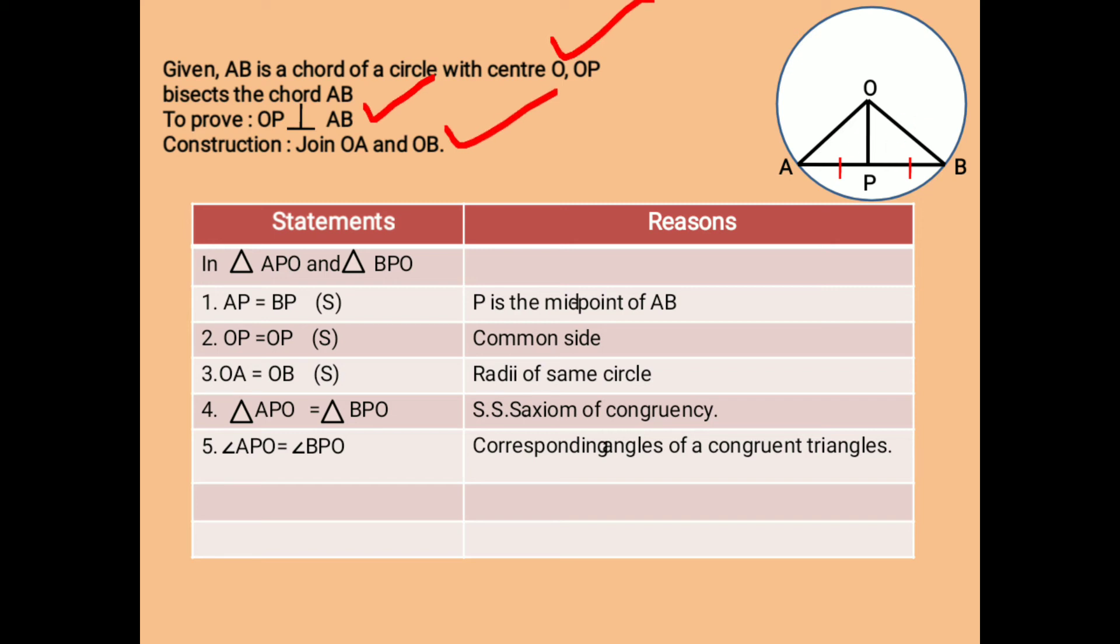Now, if we add angle APO and angle BPO, it is exactly 180 degrees, both angles being on a straight line. So statement 6 can be written as angle APO plus angle BPO equals 180 degrees.